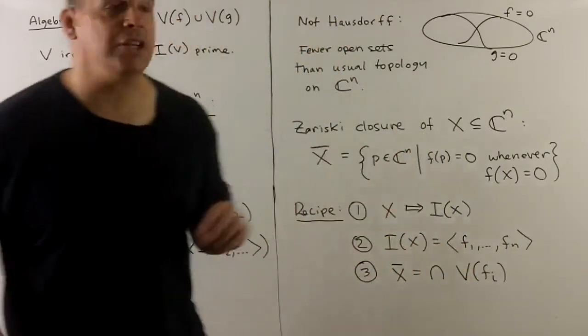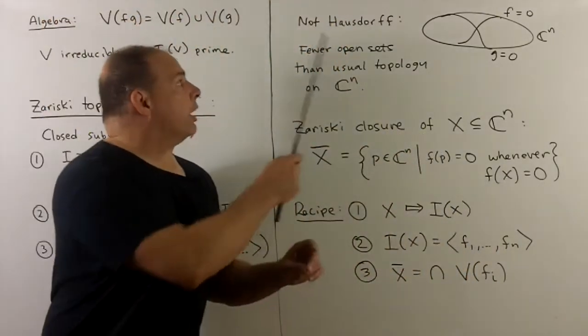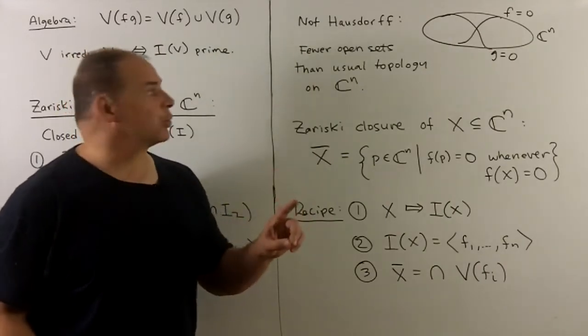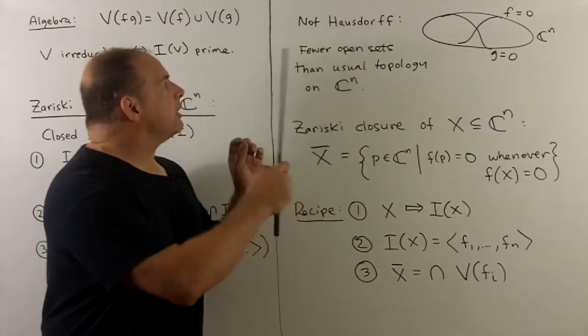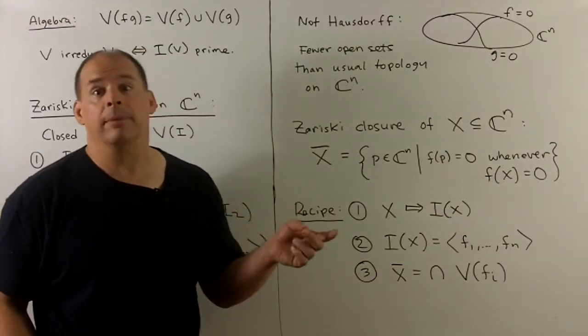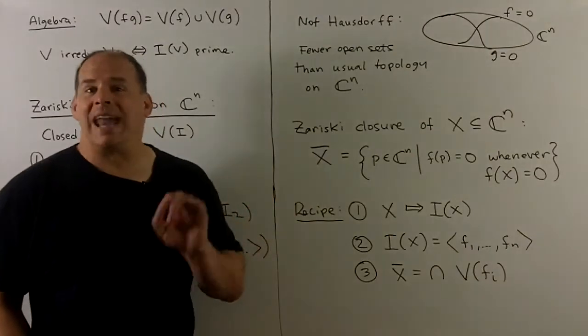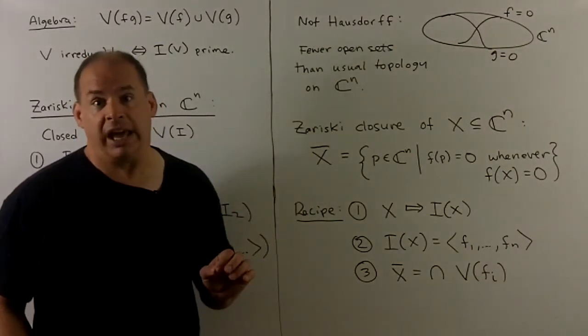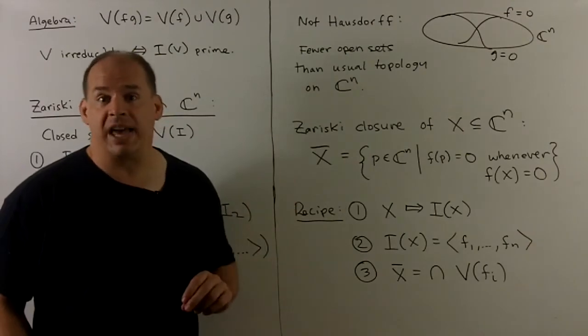This topology has some weird features. The main one is that's not going to be Hausdorff, it's going to be extremely not Hausdorff, so we're not going to have nearly as many open sets as we do in the usual topology for CN. Of course, what you can see is there are not nearly as many polynomials as there are continuous functions on CN, so there won't be as many open sets.